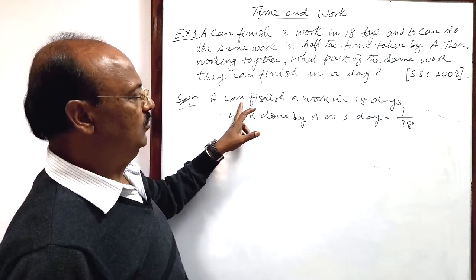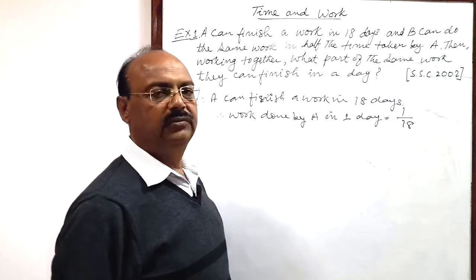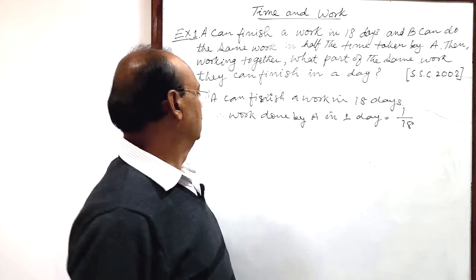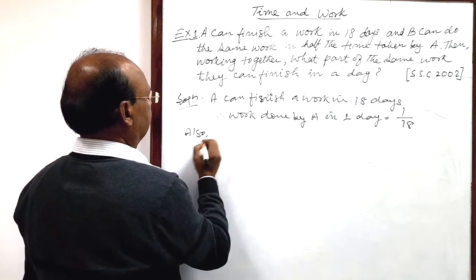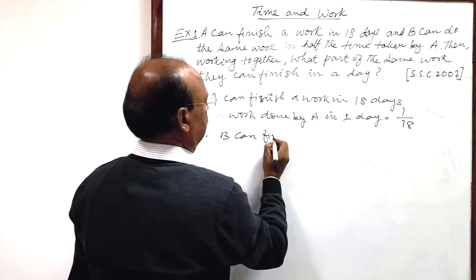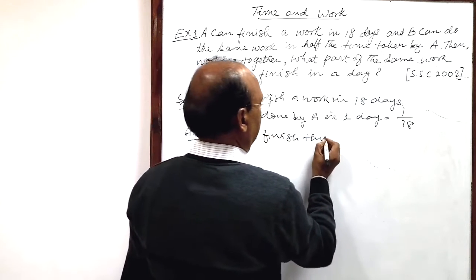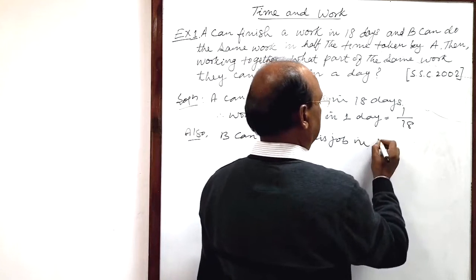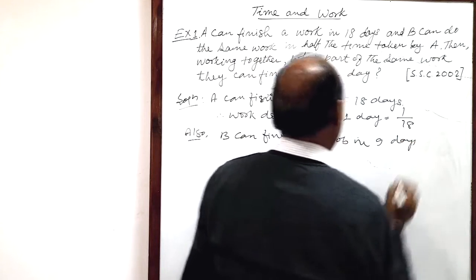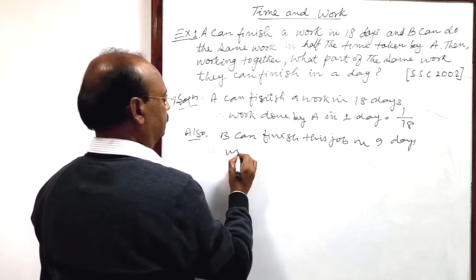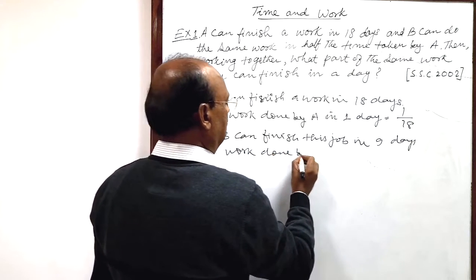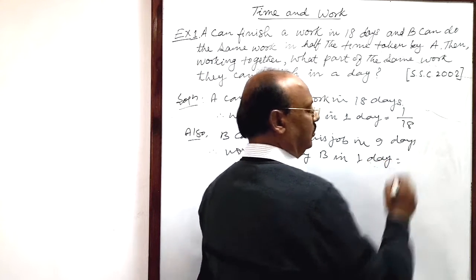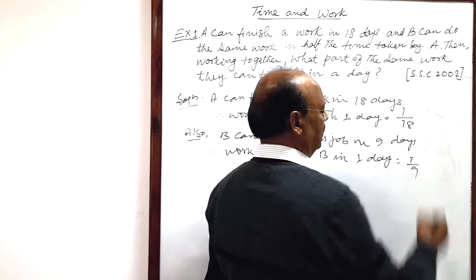Because time and amount of work, days and amount of work are inversely proportional. Also, B can finish this job in half, in half of 18 days, means in 9 days. And therefore, work done by B in one day, by unitary method, 1 by 9 part of the work.